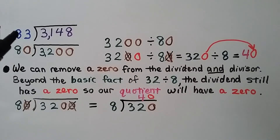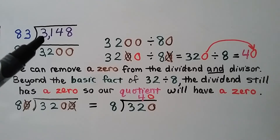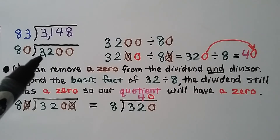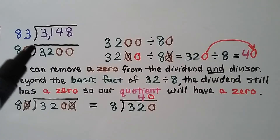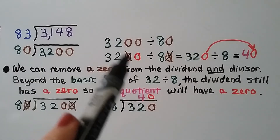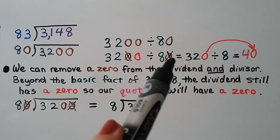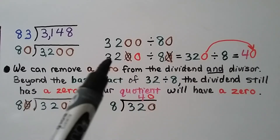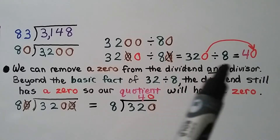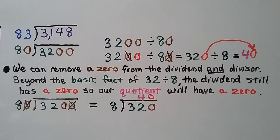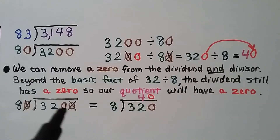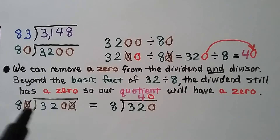For 3,148 divided by 83, we round 83 to 80 and 3,148 to 3,200, giving us 3,200 divided by 80. We cross off a zero from both the dividend and divisor, leaving 320 divided by 8. The basic fact is 32 divided by 8 equals 4, and the dividend still has an extra zero, so the quotient is 40.